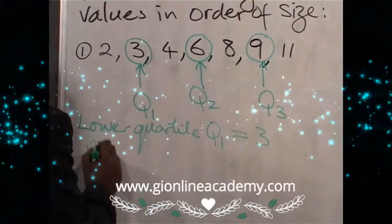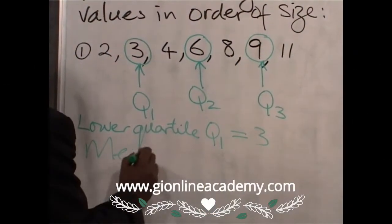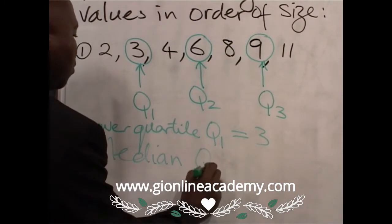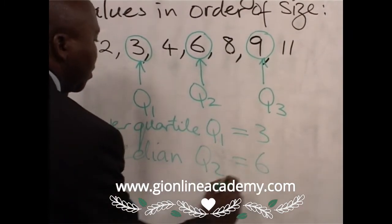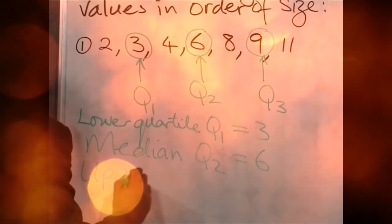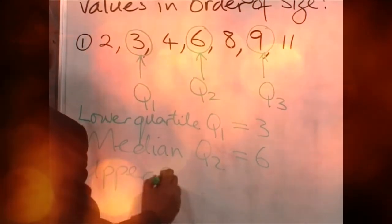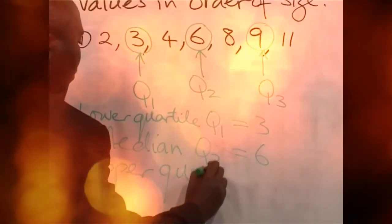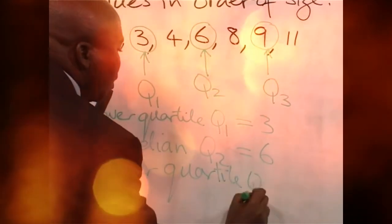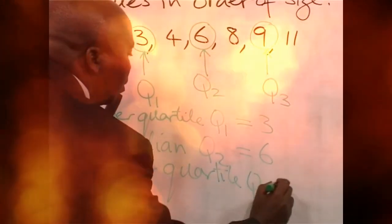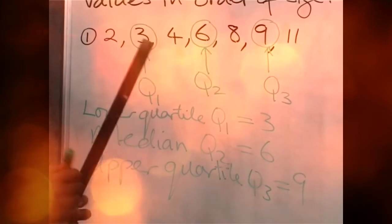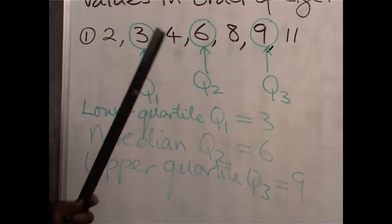The median Q2 is 6. The upper quartile Q3 is 9. Remember, we also talked about the inter-quartile range.